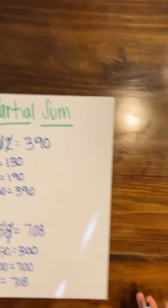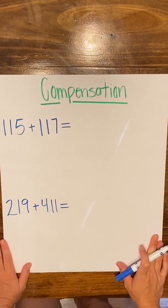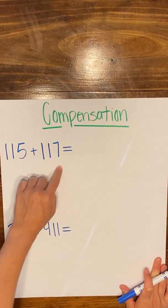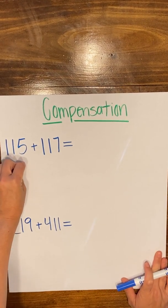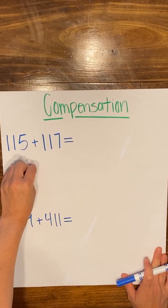So the next strategy that I'm going to look at is compensation, and this strategy works a little differently because we are going to work to make our numbers friendlier before we ever start to solve them. So what's going to happen in this strategy is that you're going to take some from one addend and give it to another addend to help make those numbers easy to work with.